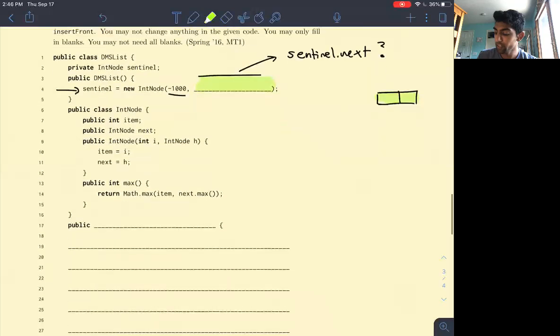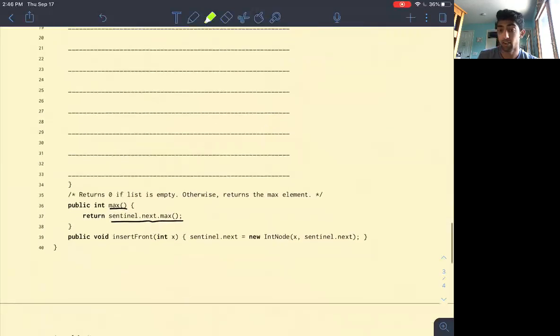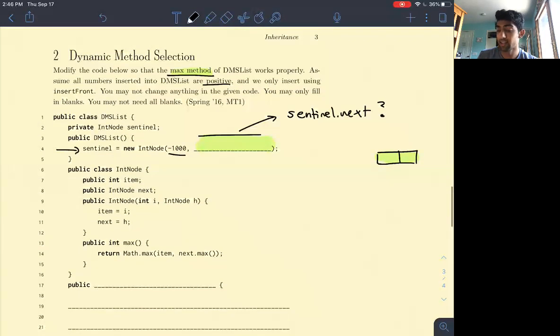So how can we try to figure out what goes here? Well, if we call sentinel.next.max and the list is empty, when we call sentinel.next.max, it'll call the max function of our node that we're adding. It'll call the max function of this green node. So if we call the max function of the green node right now, it'll call math.max of item and next.max. So it seems kind of tricky.